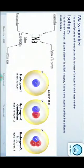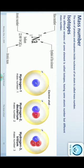So today we will start with mass number. Last time we discussed the particles of an atom — proton, neutron, and electron — and their respective places where they are found, as well as the shells and the number of electrons in each shell. Today we will start with mass number. Mass number is also called atomic mass or atomic weight. The sum of protons and neutrons inside the nucleus of an atom is called mass number.